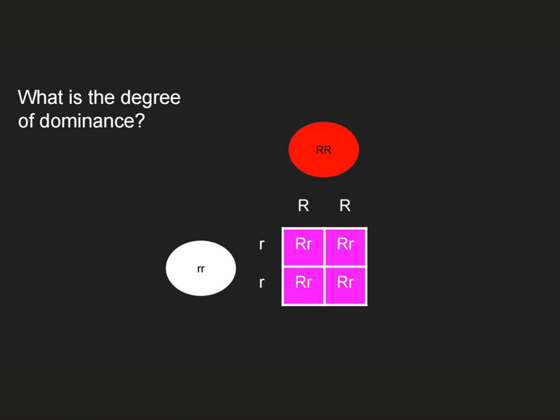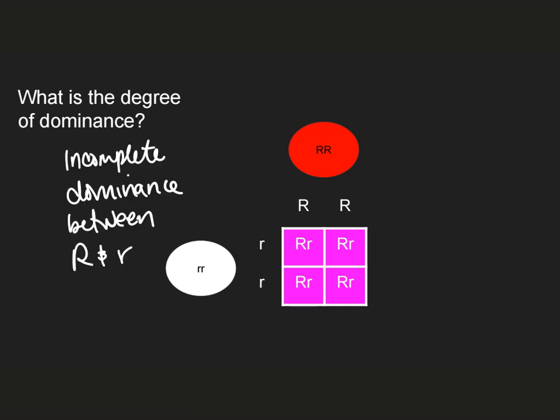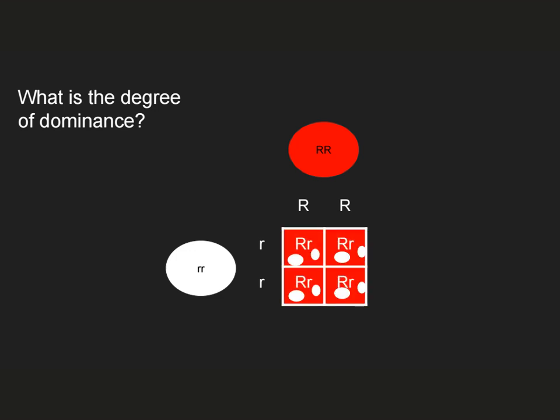Here I have the same cross between the big R, big R and little R, little R individuals. But now, in the heterozygous offspring, I observe a pink phenotype. So what would I say is the degree of dominance? Here I might say that I see incomplete dominance between the big R allele and the little R allele. And finally, what if I see a situation where the same parents produce offspring that are mottled or spotted — somehow showing the phenotypes of both parents?